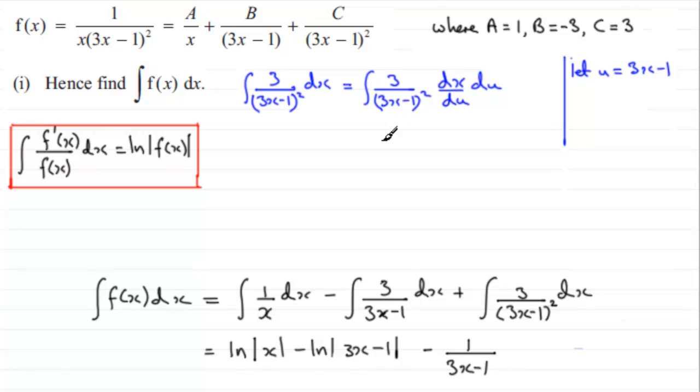Because this is exactly the same as the integral of 3 over u squared, because u is 3x minus 1. So we've got 3 over u squared. Now the thing is, what is dx/du? Well I can work out what du/dx is quite easily.